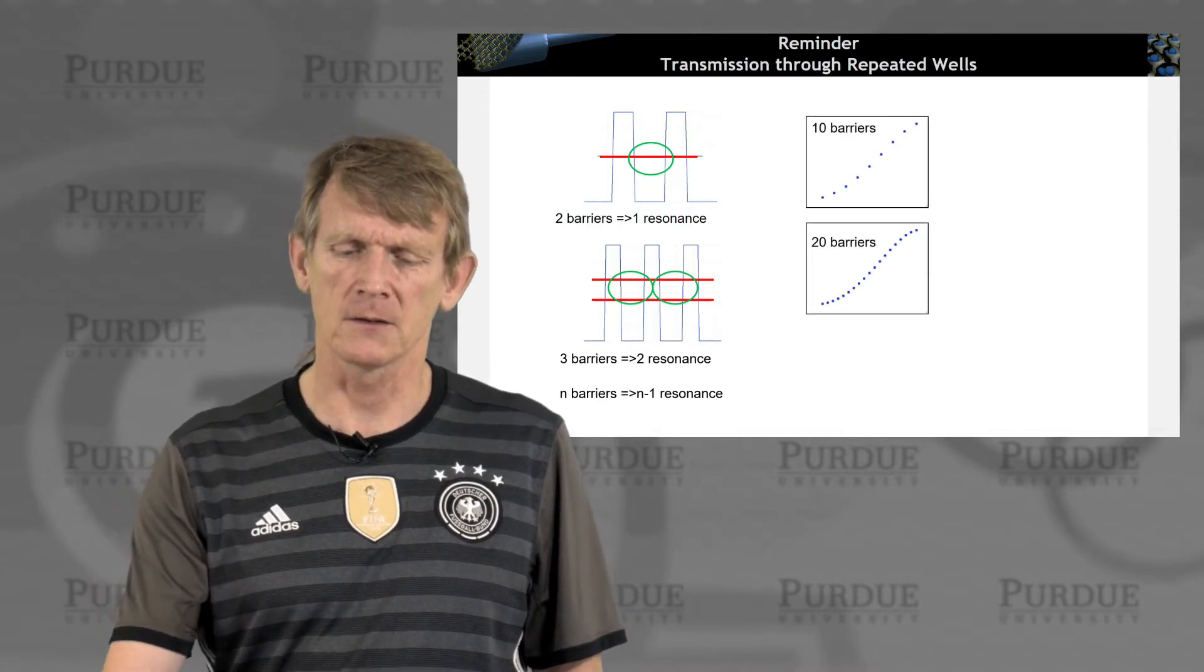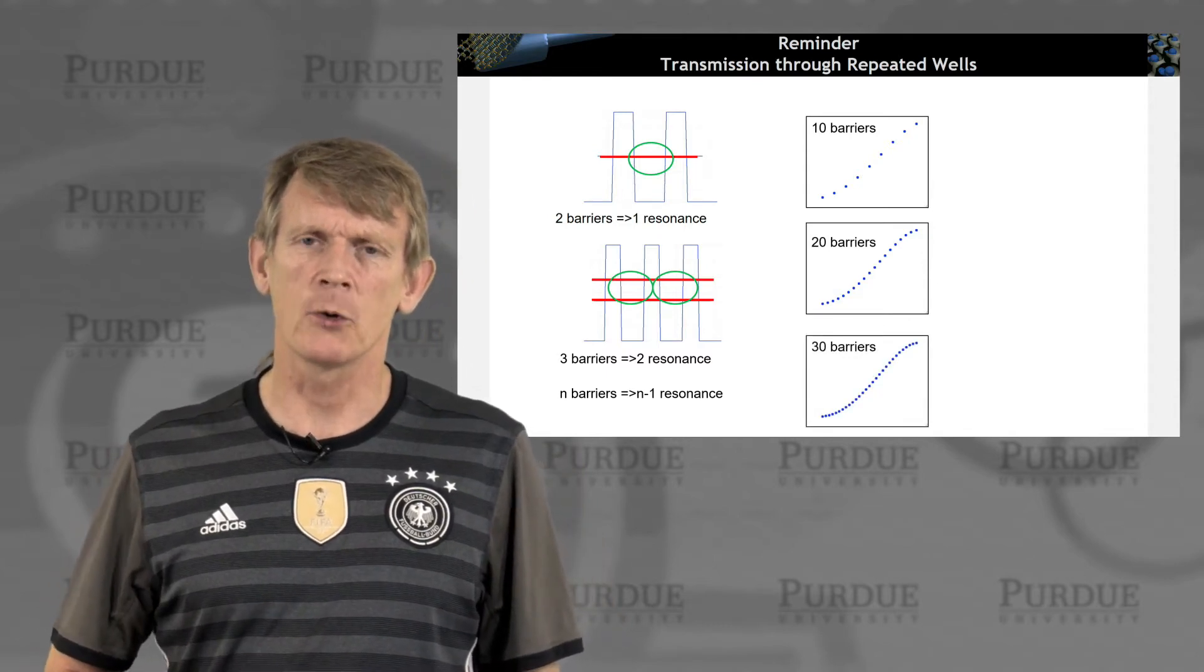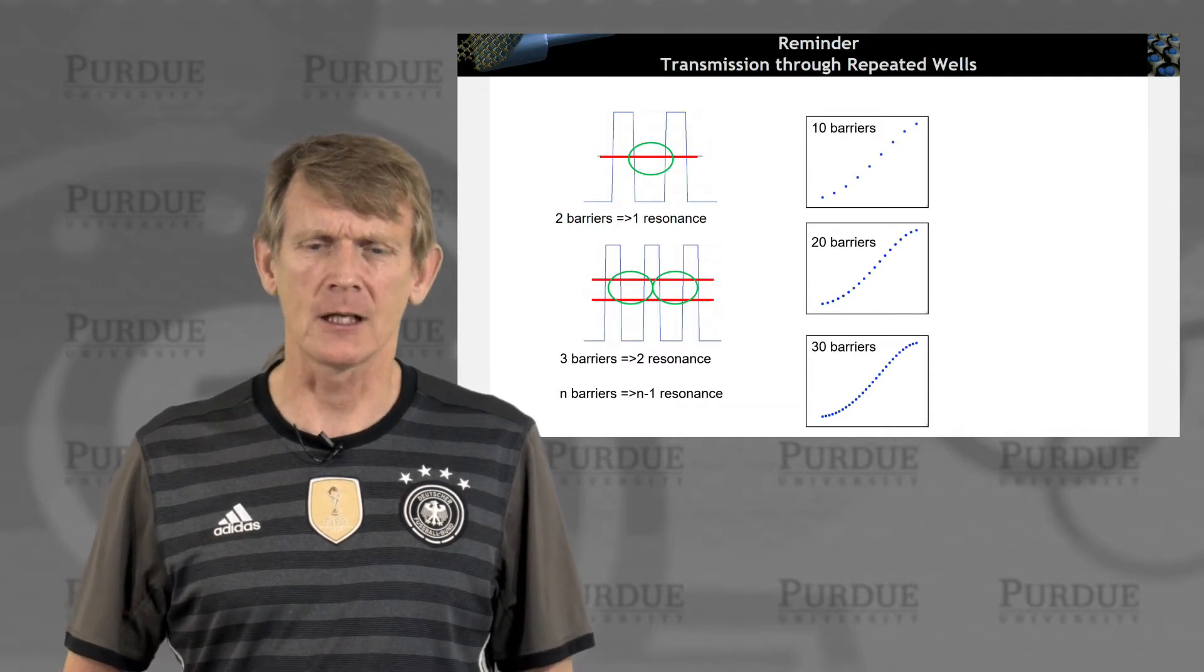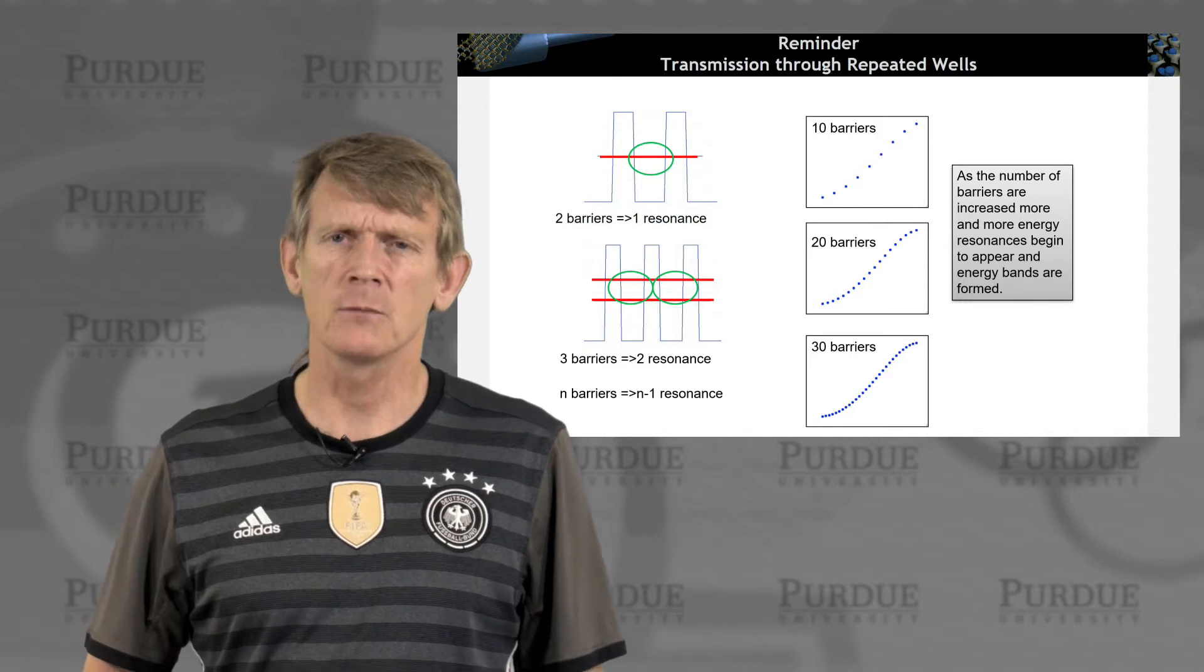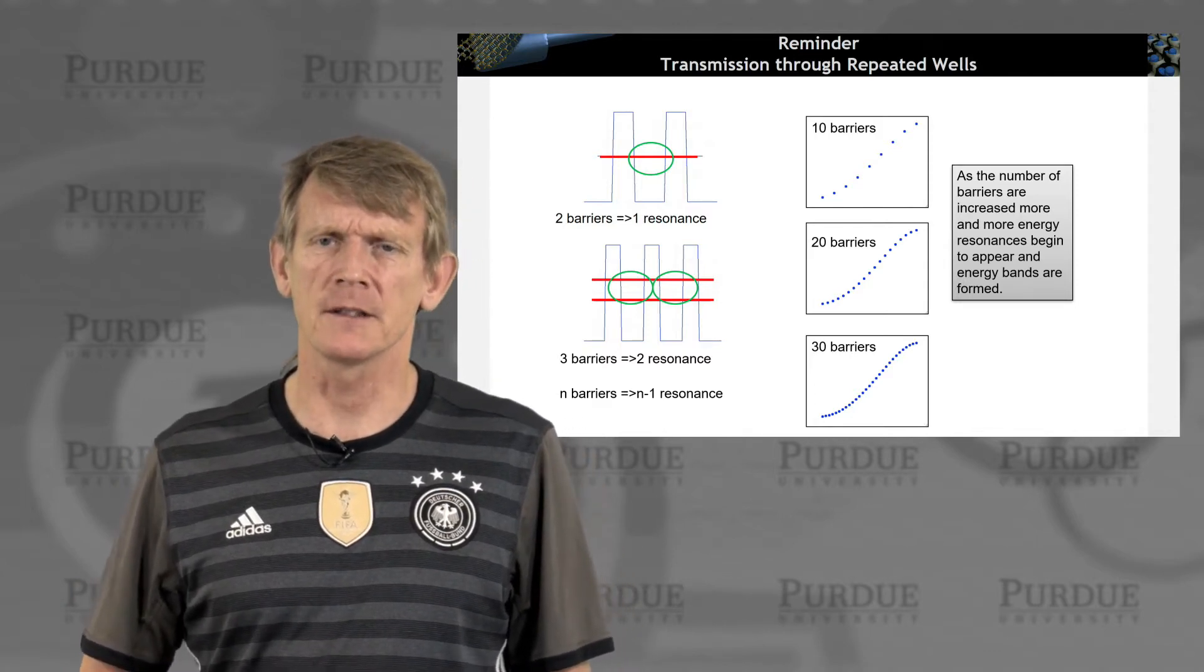So for 10 barriers, 20 barriers, and 30 barriers, there were really resonances emerging, a band pass filter, if that meant something to you as an electrical engineer. As the number of barriers increased, more and more energy resonances began to appear, and they formed a band.